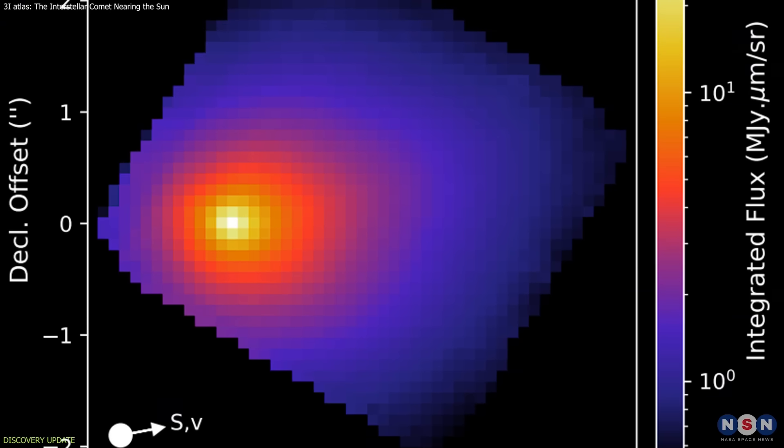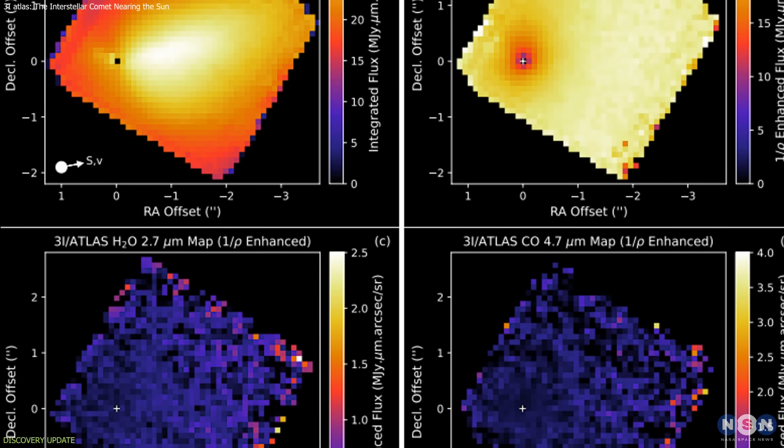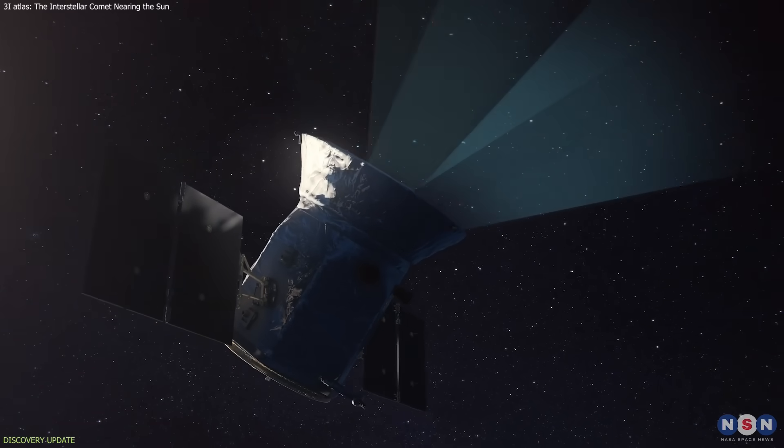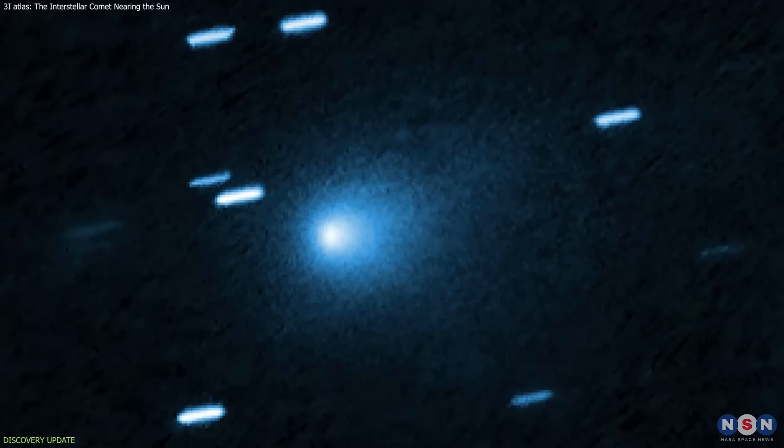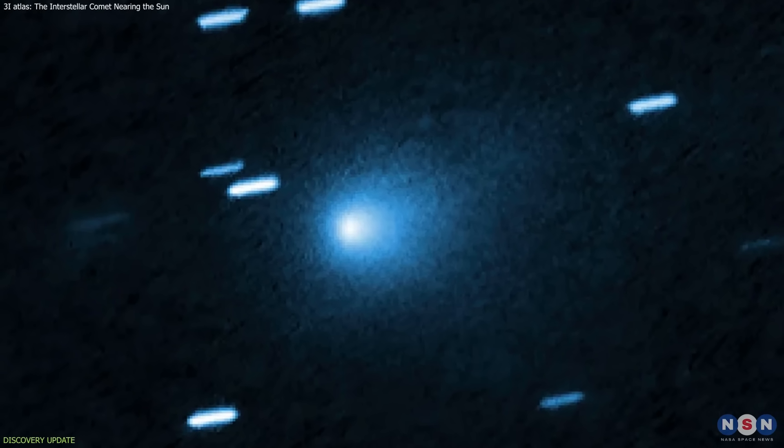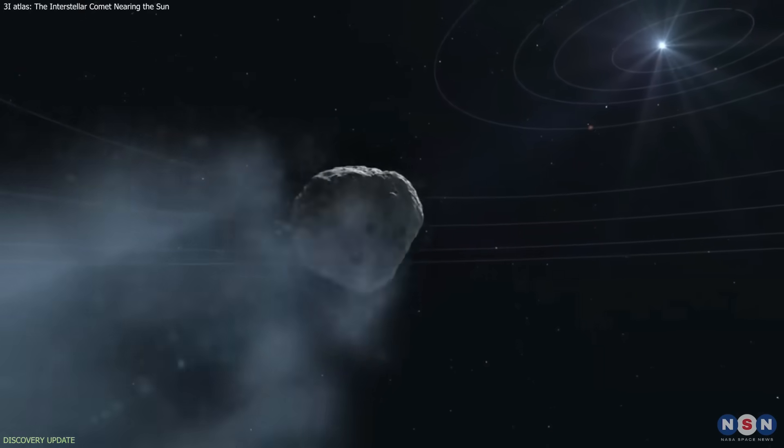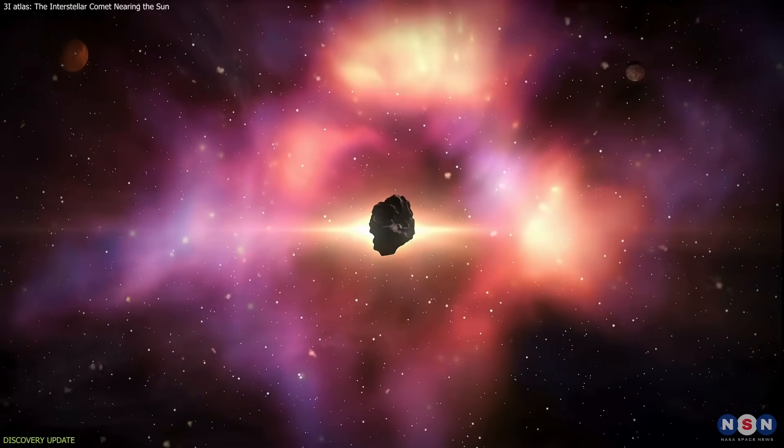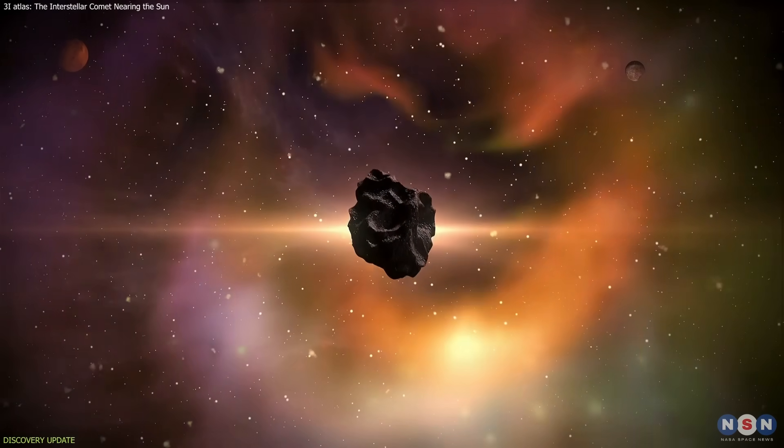Polarimetric measurements supported this picture, showing a scattering pattern consistent with fine-grained or chemically distinct dust. Archival data from the Transiting Exoplanet Survey Satellite also indicated early activity around 6 astronomical units, suggesting that its volatile materials began reacting long before it entered the inner solar system. This is rare, and it implies a composition and thermal history unlike any comet formed near the Sun.